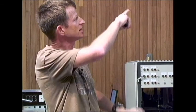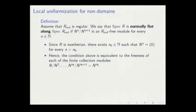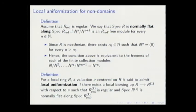What normally flat means is that all these modules—N stands for the nilradical—N^j/N^{j+1} are reduced free modules for every j. Since we are dealing with Noetherian rings, there is always an N₀ such that these powers are zero after some finite N₀. Hence this condition is equivalent to the freeness of finitely many modules.